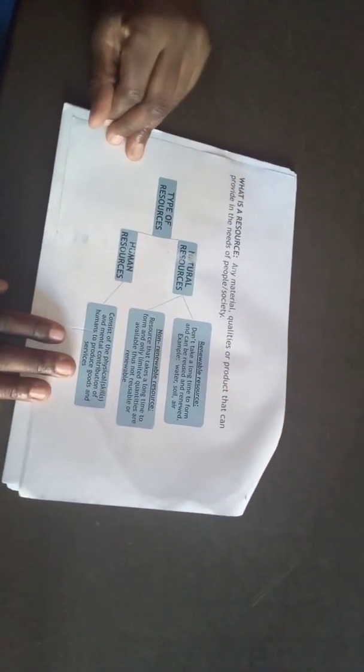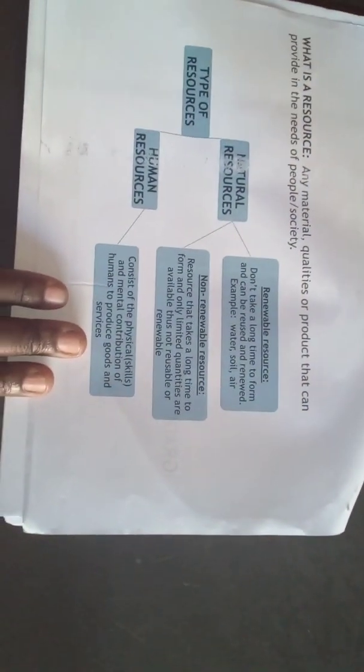Hello guys, Grade 11s, today we are starting Term 4 Geography. We are looking at resources. What is a resource? A resource is anything — any material or any product that can be used, that is useful to people and society. Just like a desk, a chair, your clothes, your toothbrush, your toothpaste, your food — all those are resources needed by people. It's any material, quality, or product that provides a need to people or society. Resources can be natural resources or human resources.